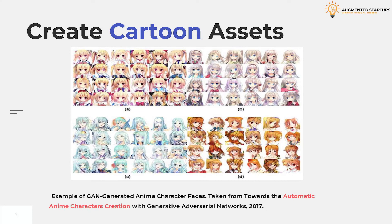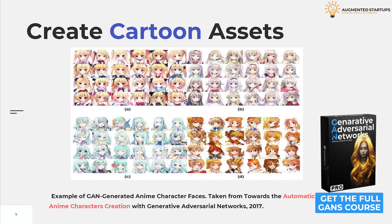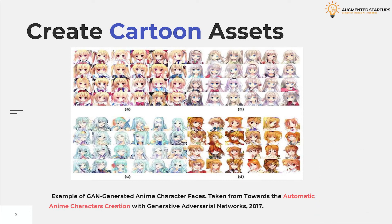Automatic generation of facial images has been well studied after generative adversarial networks came out. There exist some attempts applying the GAN model to generating facial images of anime characters, but none of the existing work gave a promising result. In this work, GAN models specialized on an anime facial image dataset were explored, addressing the issue from both the data and model aspects by collecting a cleaner, well-suited dataset and leveraging proper empirical application of DRAGAN. With quantitative analysis and case study, it was demonstrated that these efforts lead to a stable and high quality model.